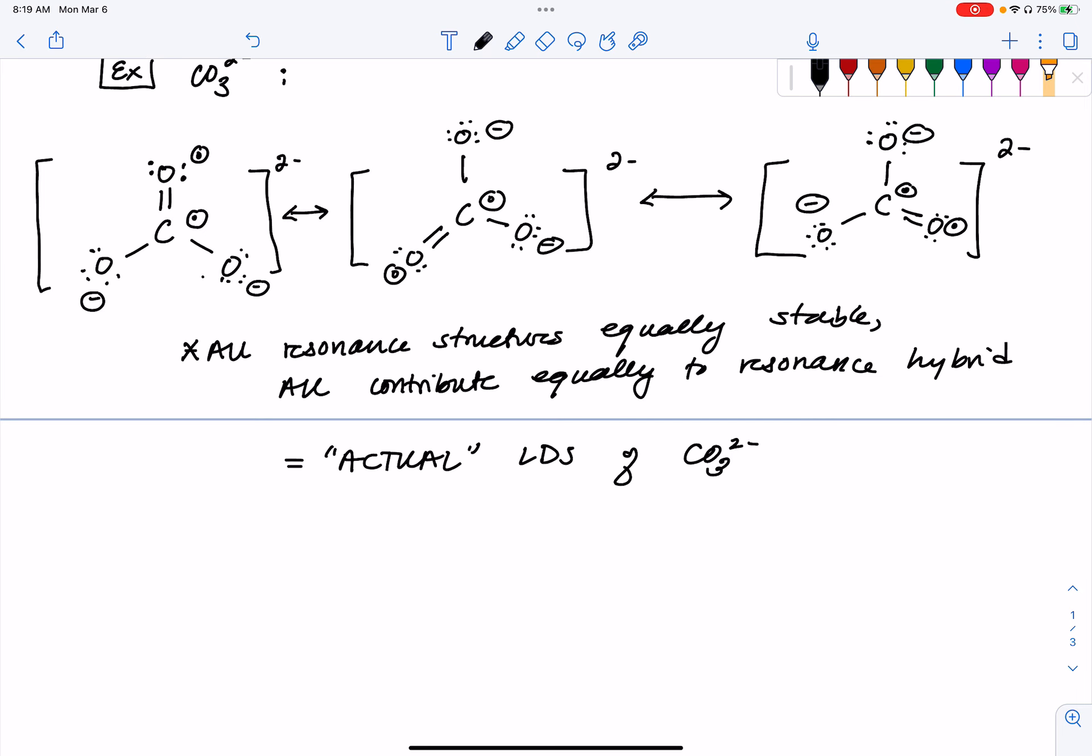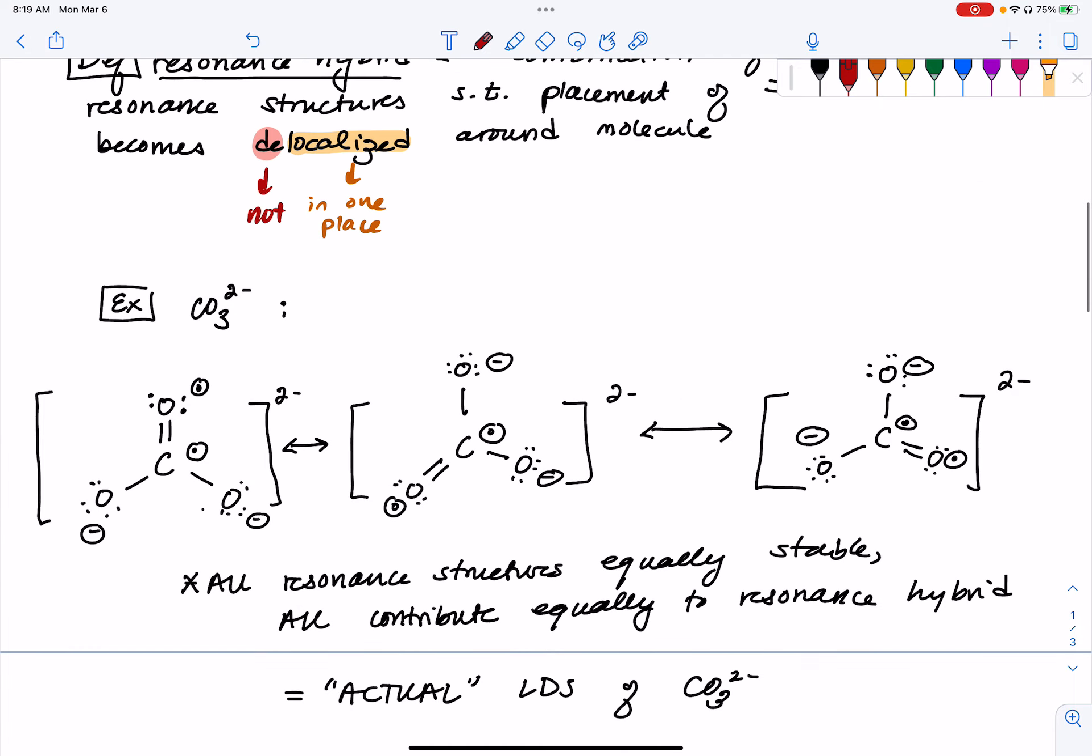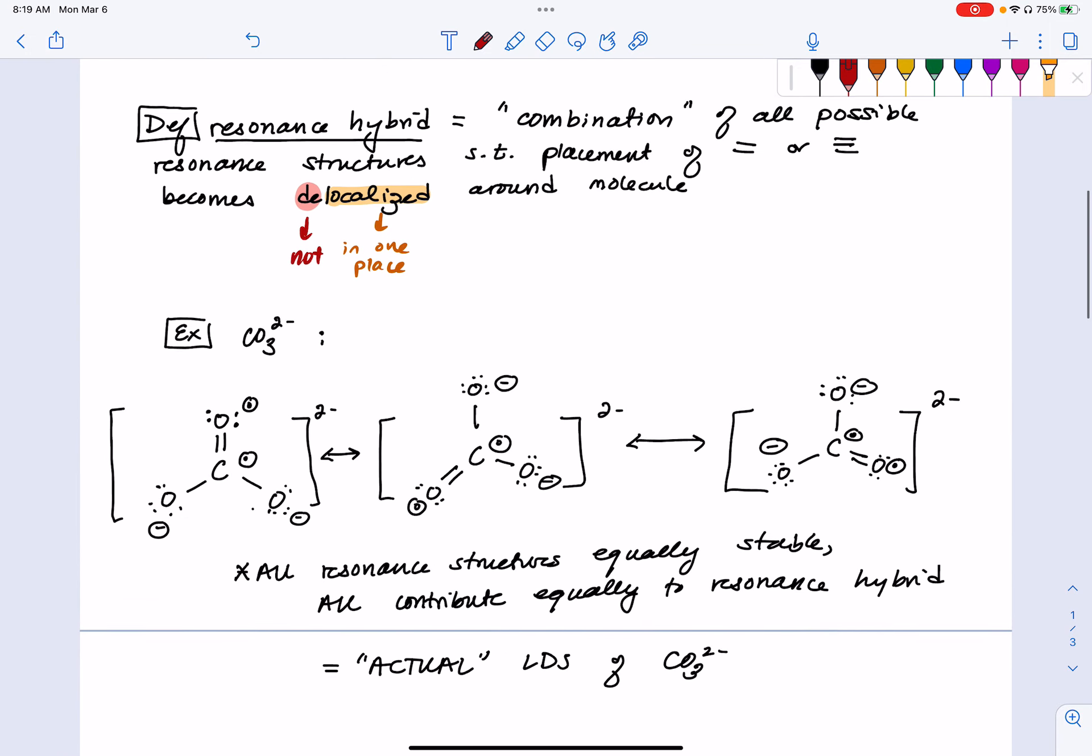So what would that look like? So remember, we said that in a resonance hybrid, it's kind of like a combination of all these possible resonance structures. I know that these arrows make us think that we've got our molecules constantly switching back and forth between each of these different versions, but in reality, that's not quite what's going on here. What we have is kind of like a superposition of all three of these versions of our carbonate ion existing at the same time.